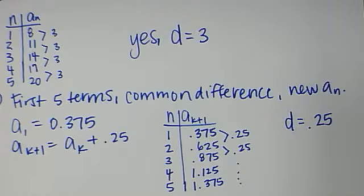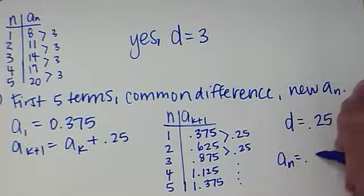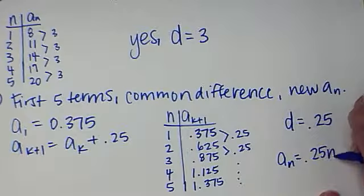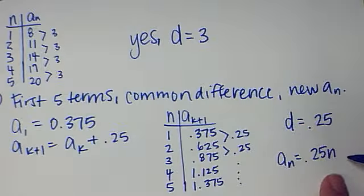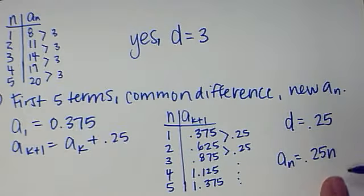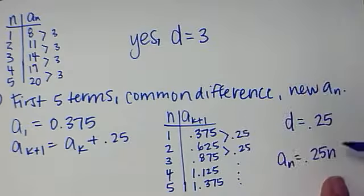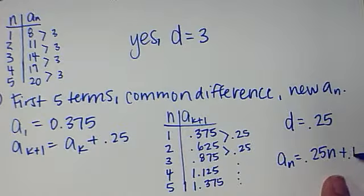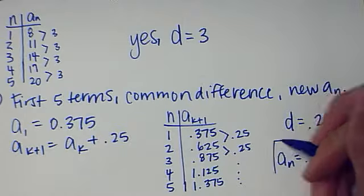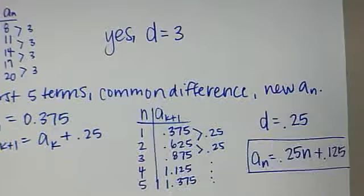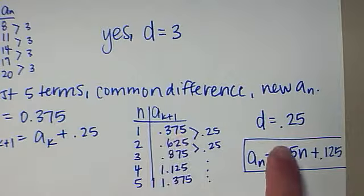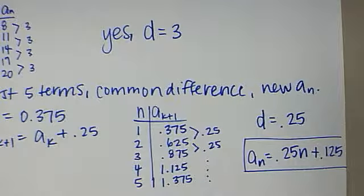And if I'm going to write a new sequence, let's figure out what that would be. My A sub N is 0.25, that's my common difference, times N. And 0.25 times 1 gives me 0.25, what do I need to do to get to 0.375? Well add 0.125. The reason I know to add 0.125 is to do 0.375 minus 0.25 and get that original.